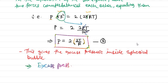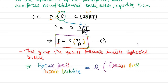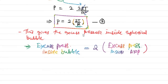So the excess pressure inside a spherical bubble equals twice the excess pressure inside a spherical drop. This means the excess pressure in a bubble is always double that of the excess pressure of a droplet of the same radius.